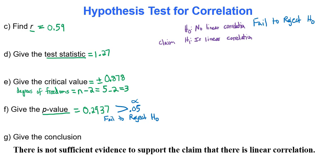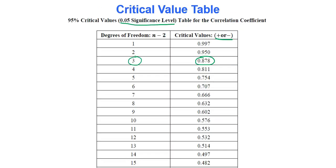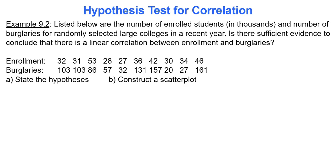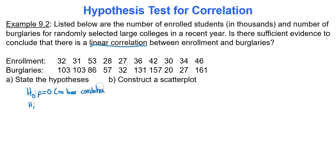Perhaps we should have used more data points, but this example shows how the process works. In the second example, listed below are the number of enrolled students in thousands and number of burglaries for randomly selected large colleges in a recent year. The question is whether there is sufficient evidence to conclude there is linear correlation between enrollment and burglaries — that is our claim. The hypotheses are the same: rho equals zero means no linear correlation; rho not equal to zero means there is linear correlation.